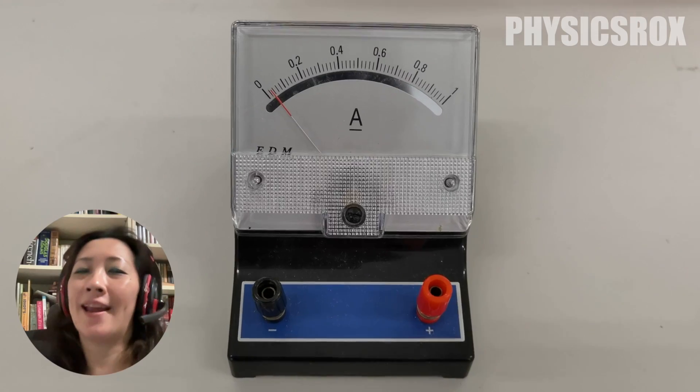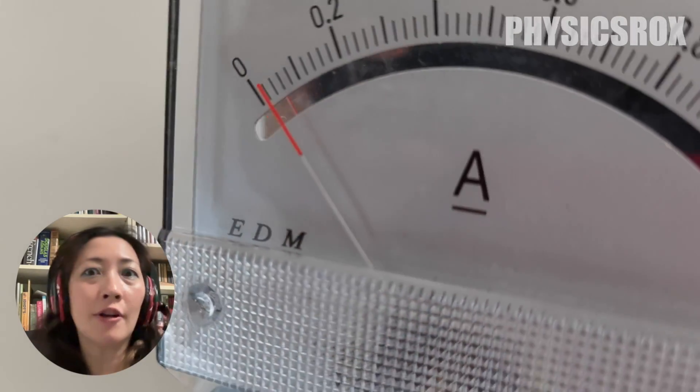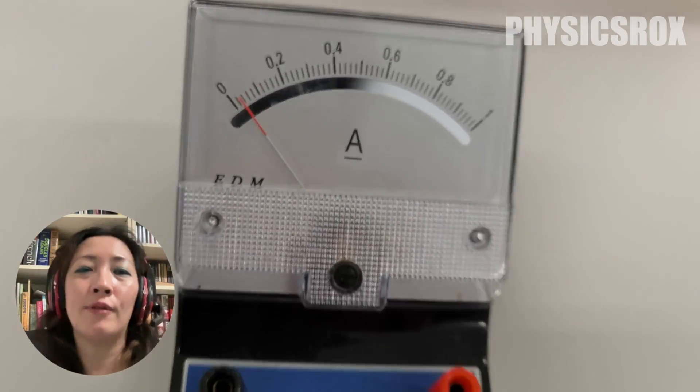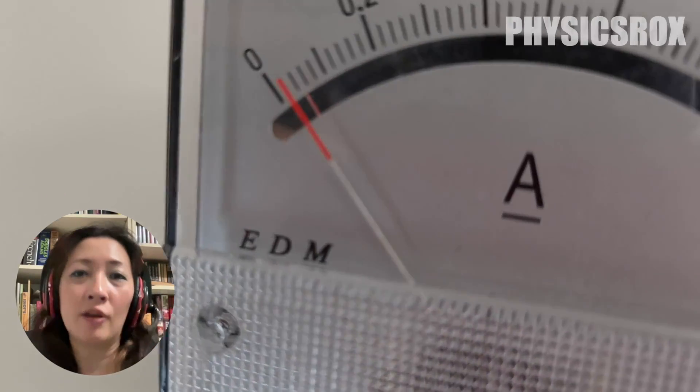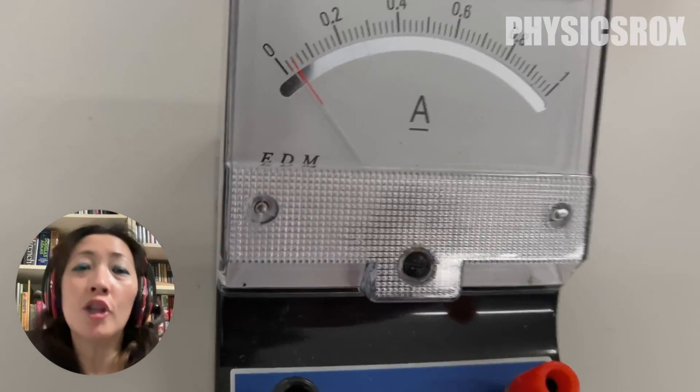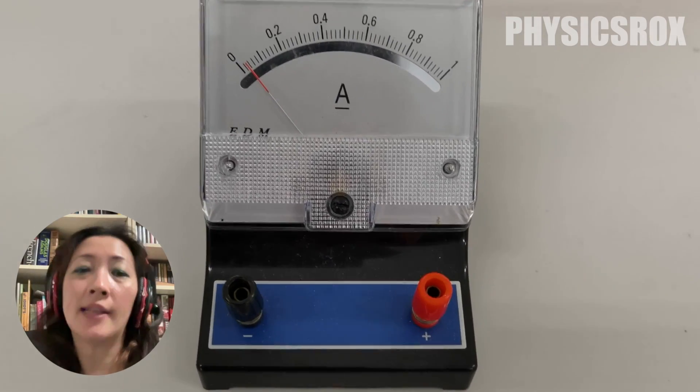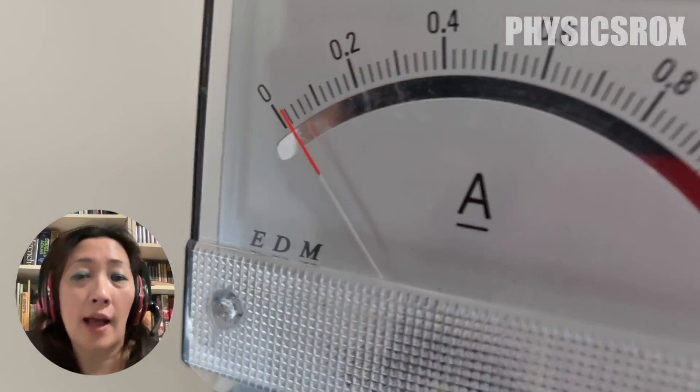What if we get an ammeter where it shows us a value even though it's not connected to a circuit just like this? This kind of error is known as a zero error. A zero error is the situation where the measuring instrument shows us a non-zero reading even though it's not measuring anything, which means it's supposed to give us the value of zero.